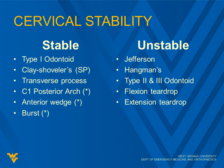Here's our recap of cervical fracture stability. Stable fractures: type 1 odontoid, clay shoveler's, transverse process (though we need to worry about the vertebral artery there), C1 posterior arch, anterior wedge, and burst — which can be stable or quite dangerous depending on the situation. Unstable fractures: Jefferson, Hangman's, type 2 and 3 odontoid, flexion teardrop, and extension teardrop — differentiating those last two by extension not having any vertebral body height loss.